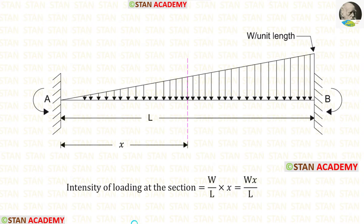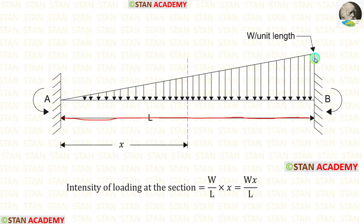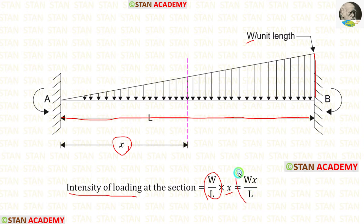In this beam, let us make a section at a distance of X from point A. In this section we have to find the intensity of the loading. The total height is W for the full length L, but we want the height at distance X. So we multiply to get the intensity of loading as WX upon L.